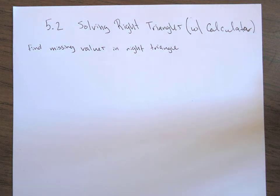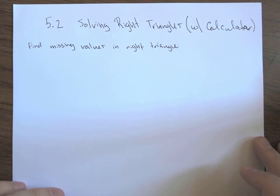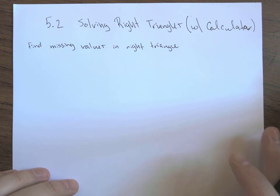All right, so the last thing in section 5.2 that we should talk about is a little bit of calculator stuff that I'm going to tie into solving a right triangle. Solving a right triangle just means finding all the different values, angle values, and side lengths.